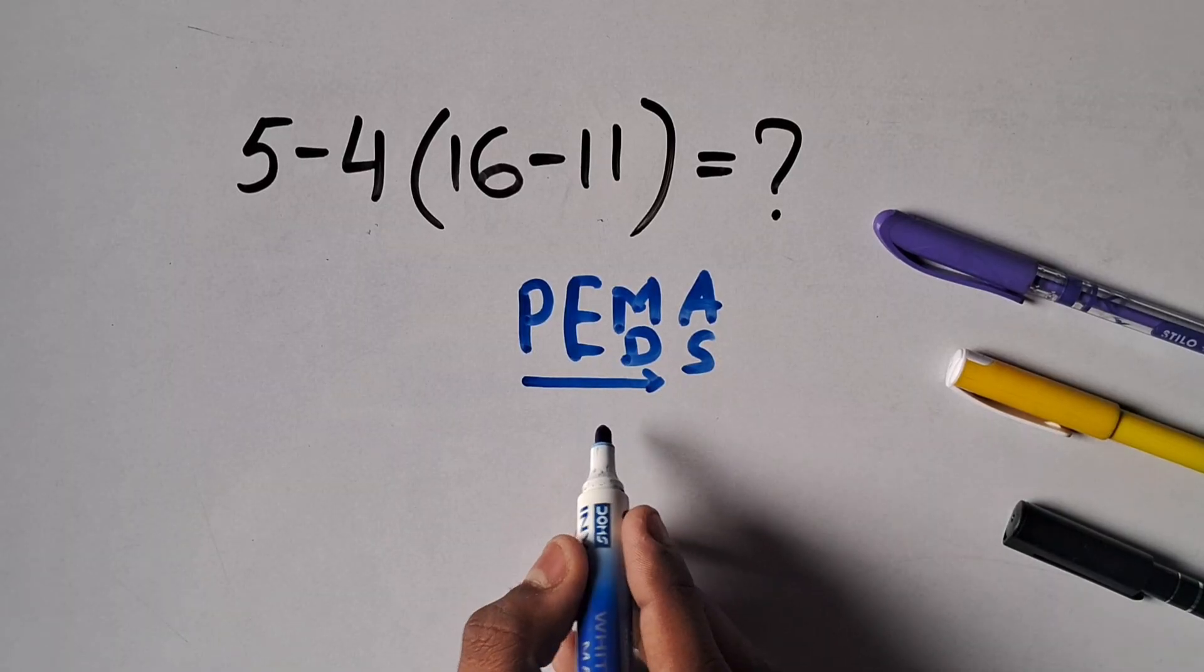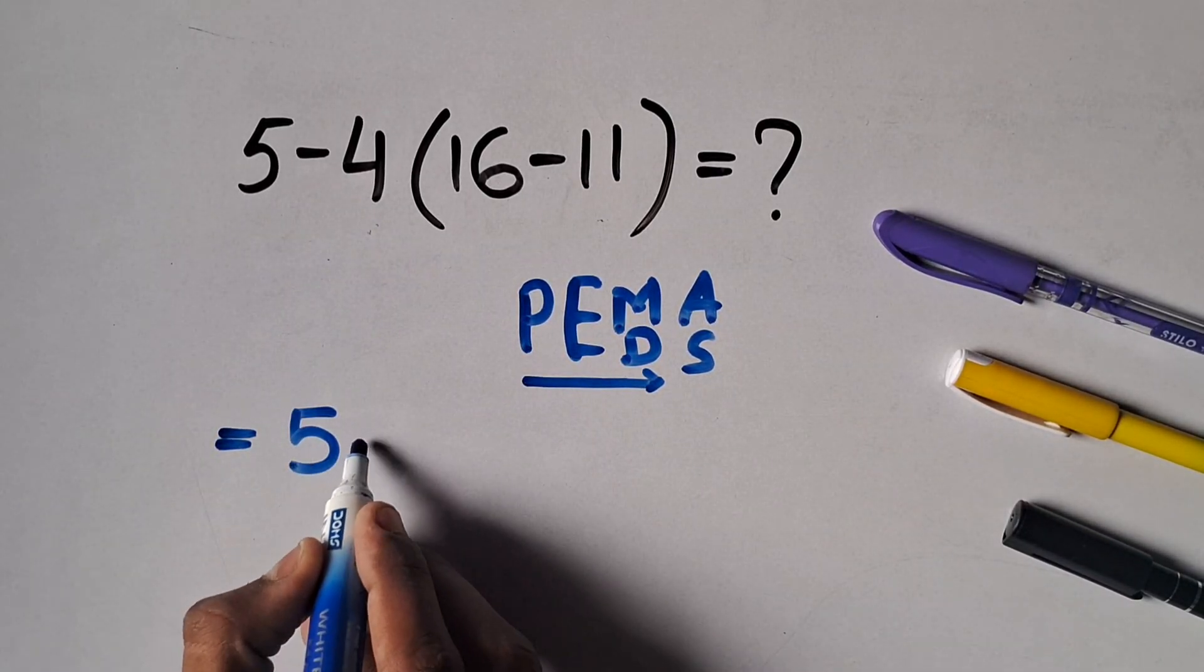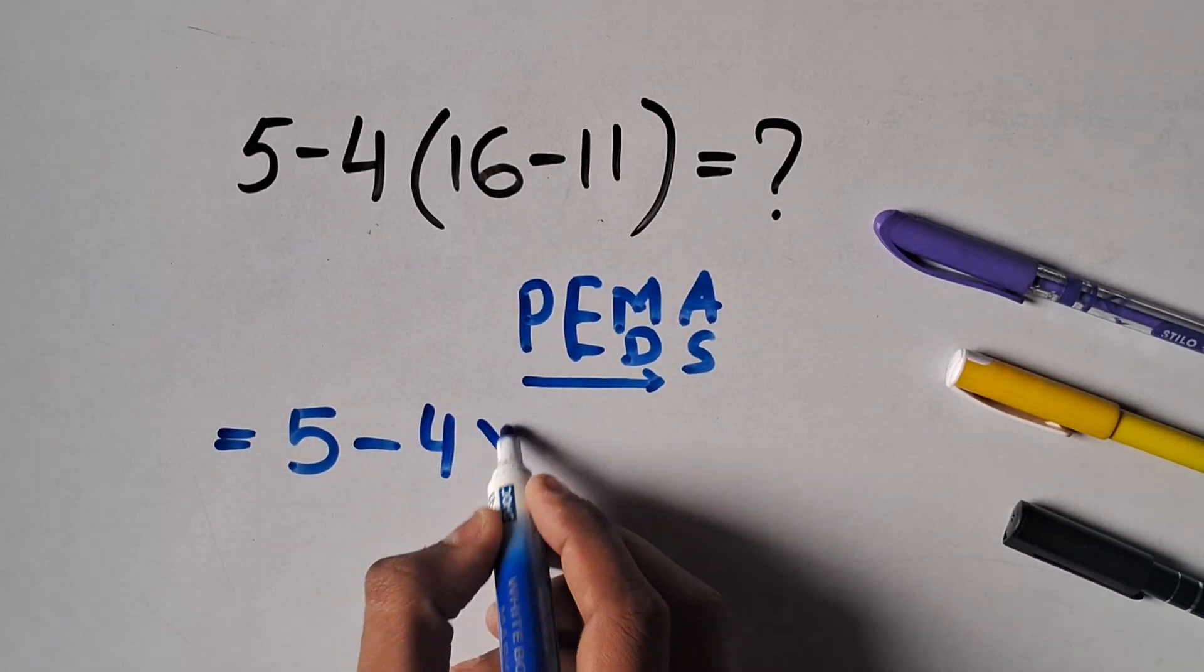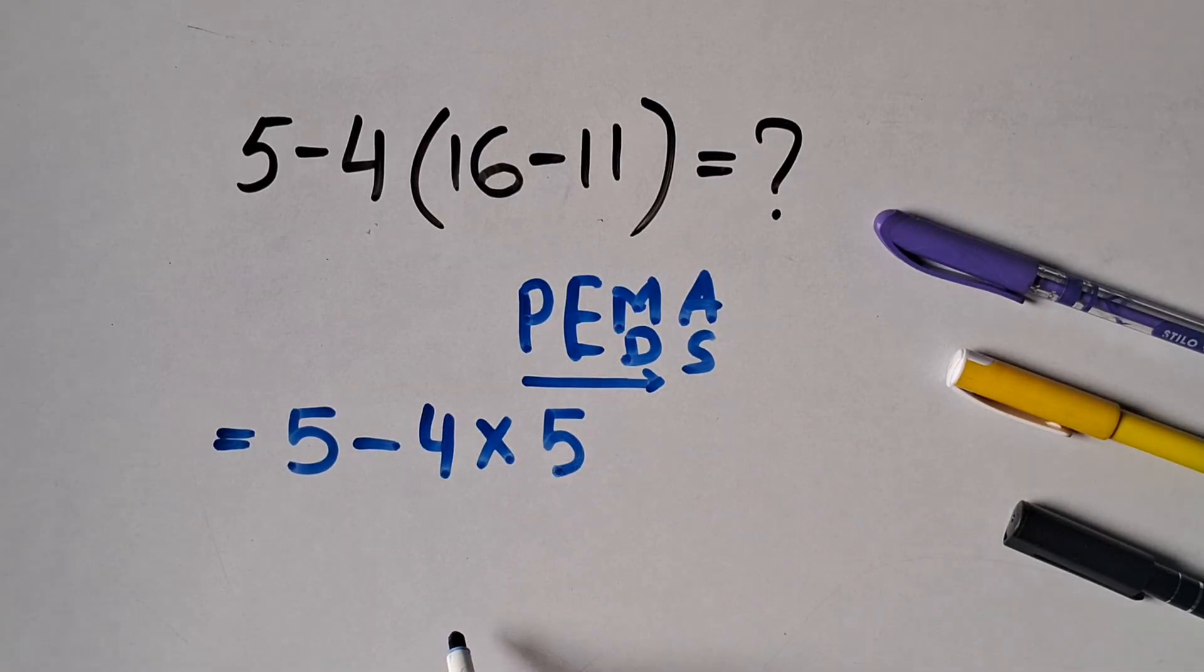Let's apply this rule and find the value of this expression. For 5 minus 4 times 16 minus 11, we first calculate 16 minus 11 equals 5, and we have to solve the multiplication first as